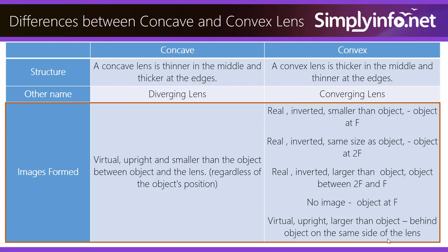The image is real, inverted, and larger than the object when the object is between f and 2f. No image is formed when it is placed at f. The image is virtual, upright, and larger than the object when the object is behind — on the same side of the lens.